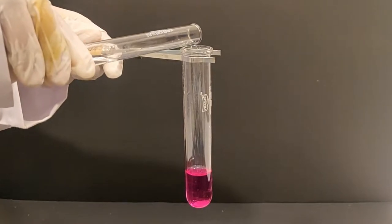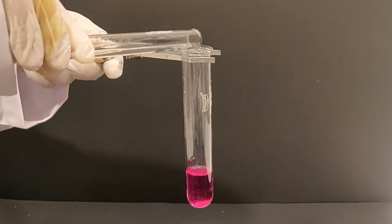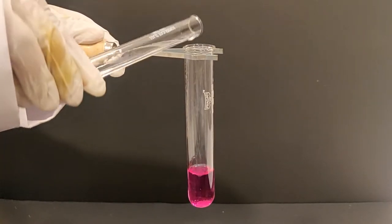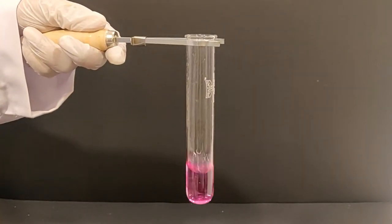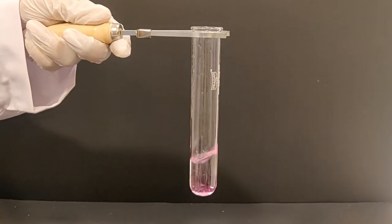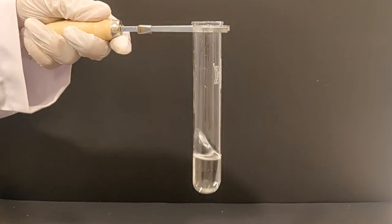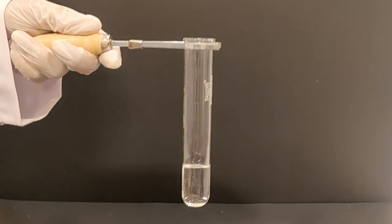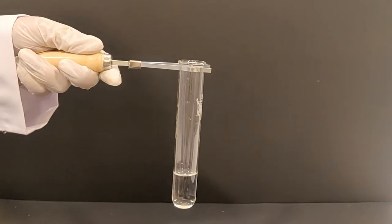Now, add some dilute hydrochloric acid to the test tube. You will notice the pink color vanishes and the liquid becomes colorless again. Why does this happen?